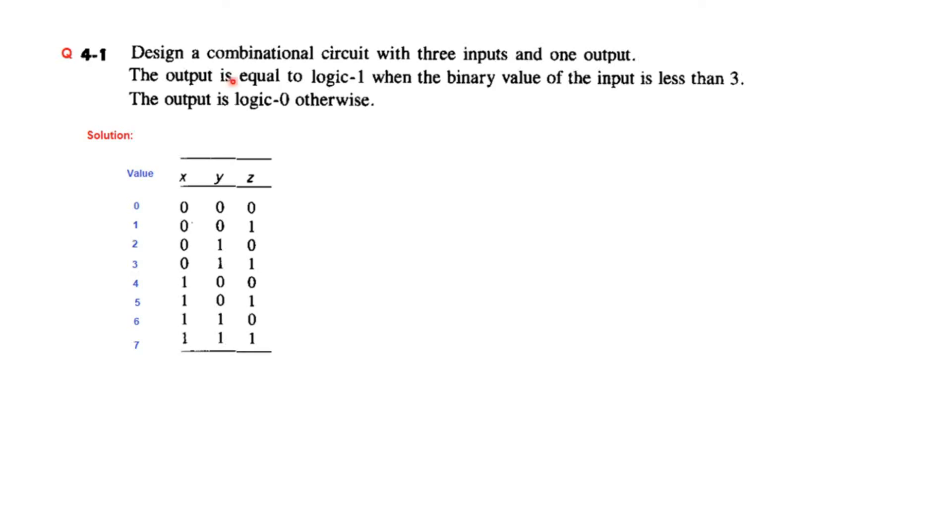The output is equal to logic-1 when the binary value of the input is less than 3. So less than 3 means up to this point the output should be 1, and for the remaining it should be 0.